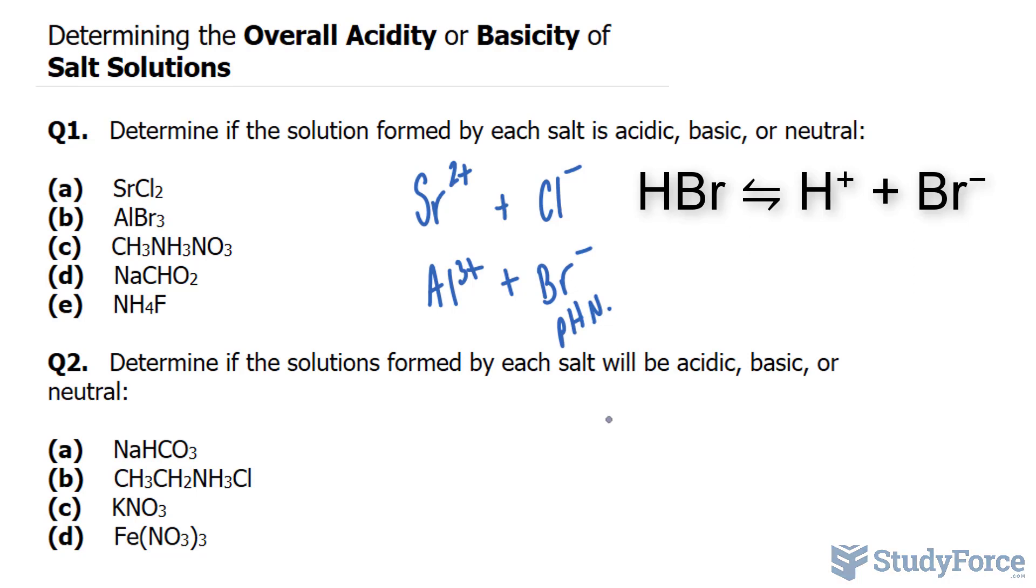Aluminum 3 plus, on the other hand, acts as a weak acid. This is because aluminum is a small yet heavily charged cation. And it is neither an alkali metal nor an alkaline earth metal. This is why it behaves as an acid. It can actually ionize water.